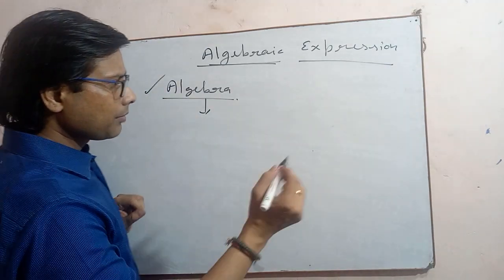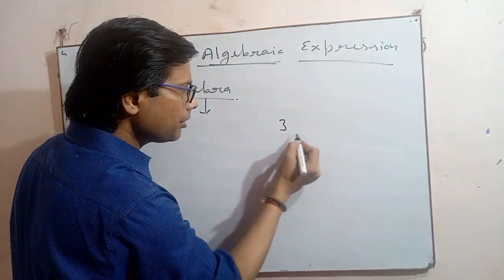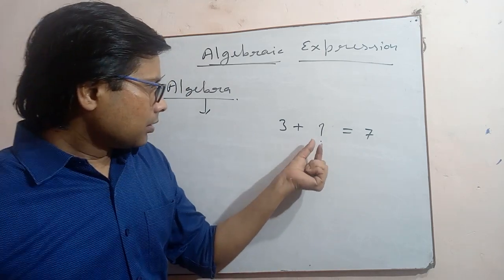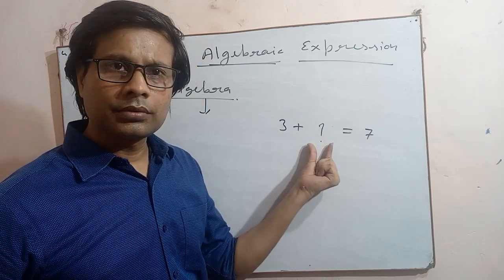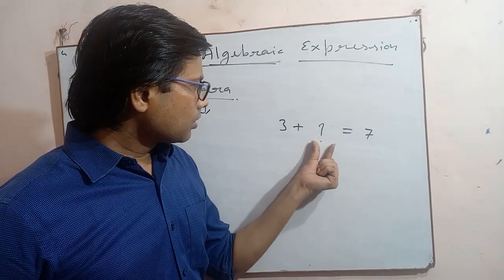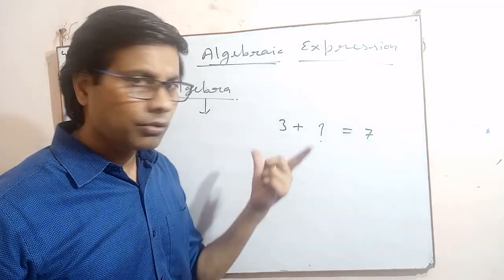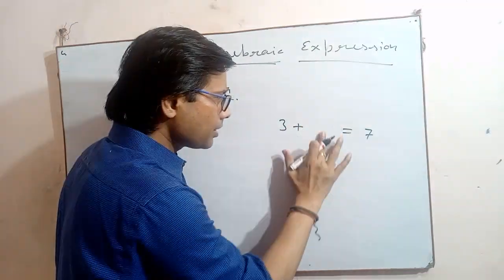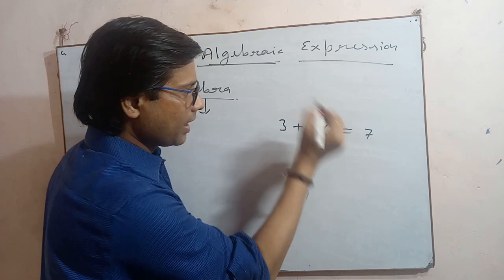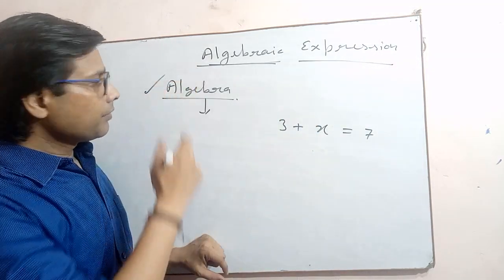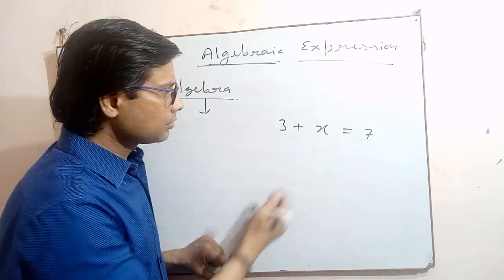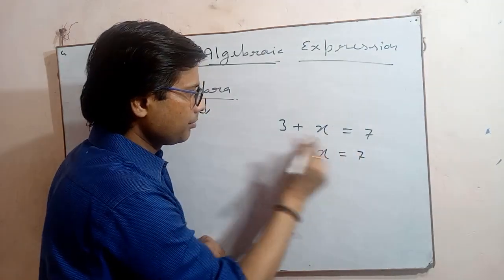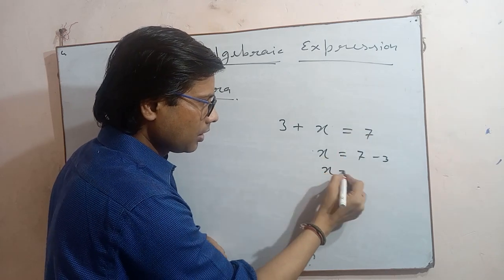Now, what is the use of algebra? Suppose I ask you a simple question: 3 plus what equals 7? So 3 plus 4 equals 7 — correct. Now, in algebra, instead of a question mark, we use symbols or letters. So we write x, and solve: x equals 7 minus 3, so x is 4.